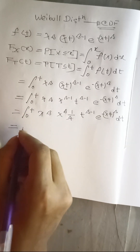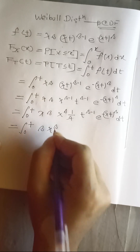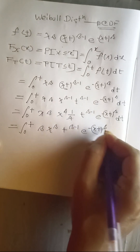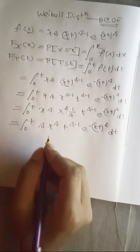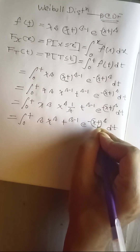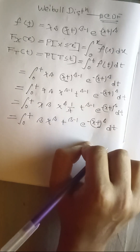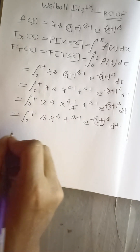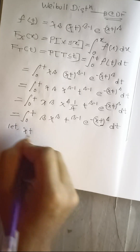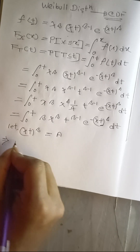We are concerned with the term (λt)^β because we cannot simplify directly from the other parts. So we use substitution: let a = (λt)^β, and we differentiate both sides.